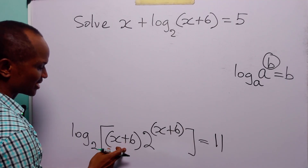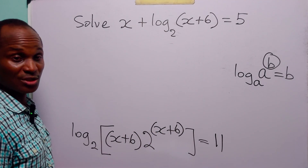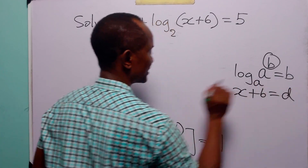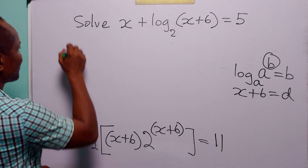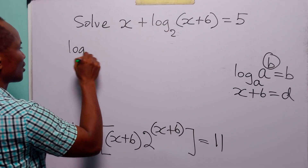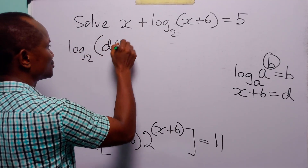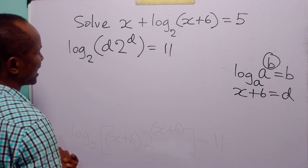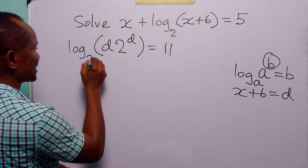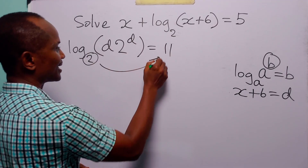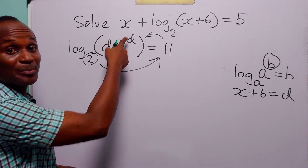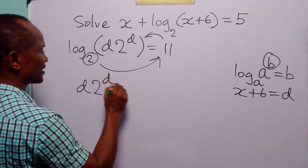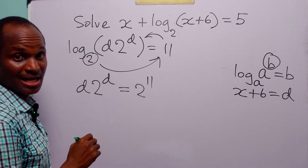Since we have x plus 6 appearing twice, let us simplify by letting x plus 6 equal the letter d. We now have log to base 2 of d times 2 to the power d is equal to 11. This simply means that 2 to the power 11 is equal to d times 2 to the power d.